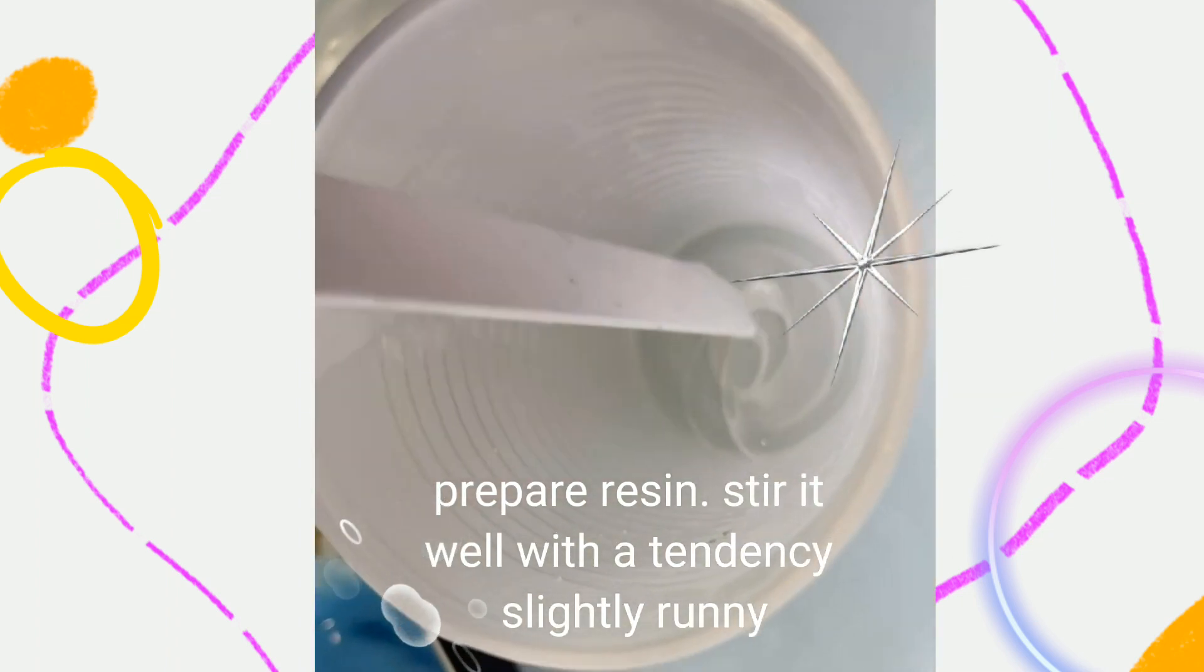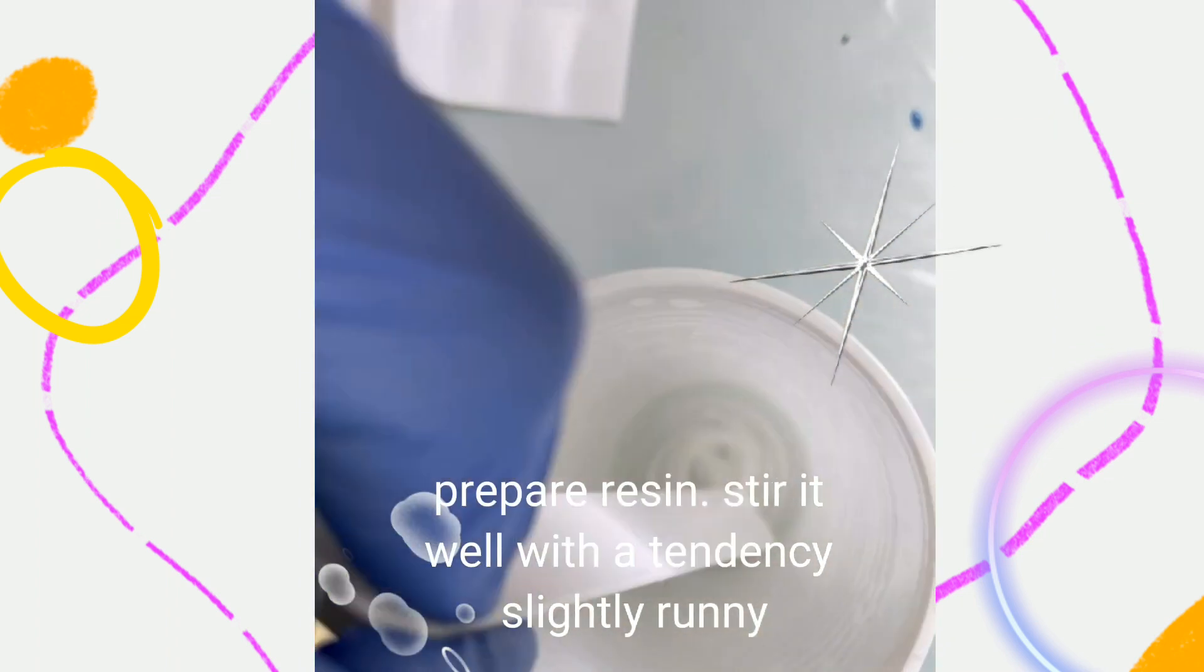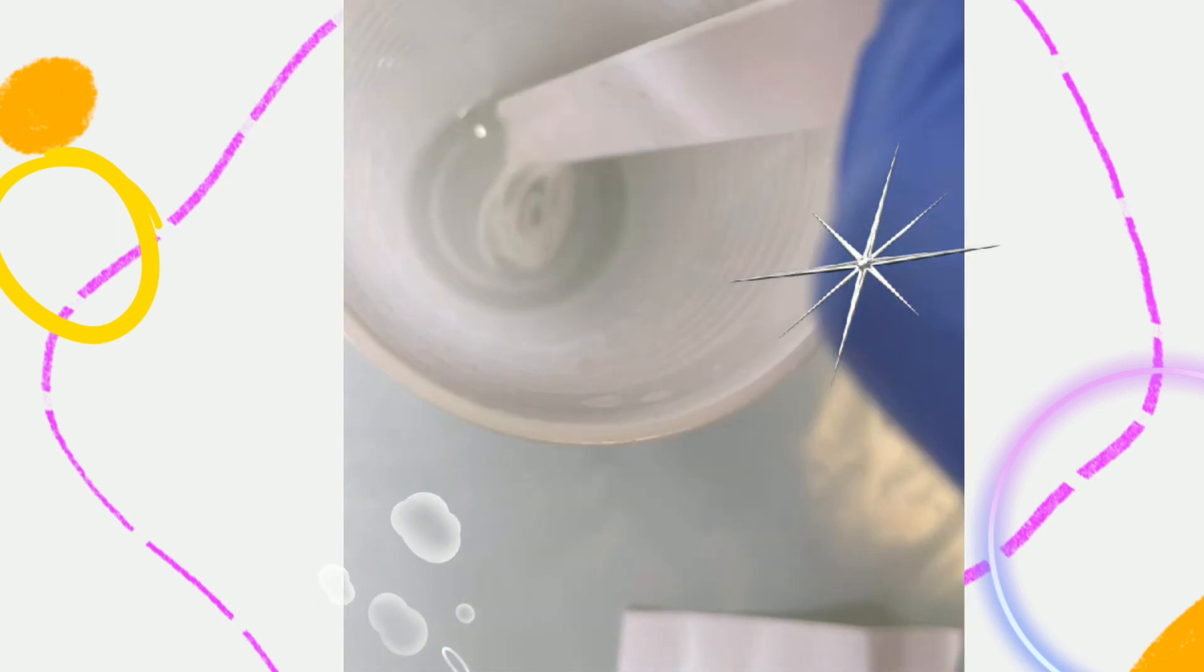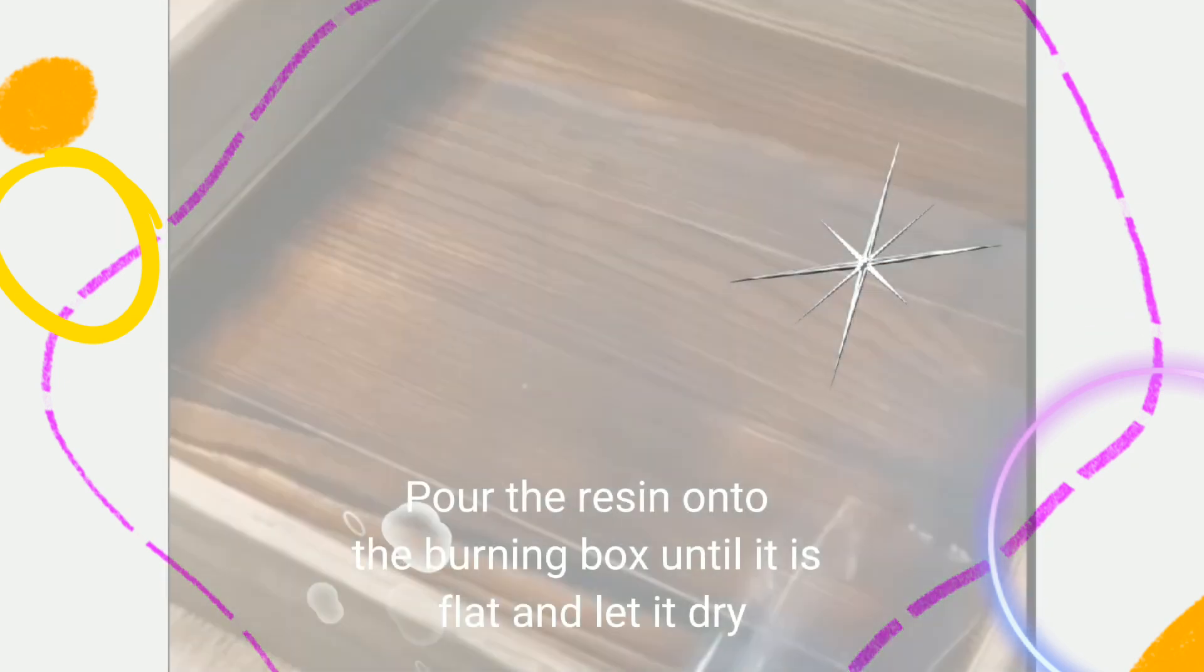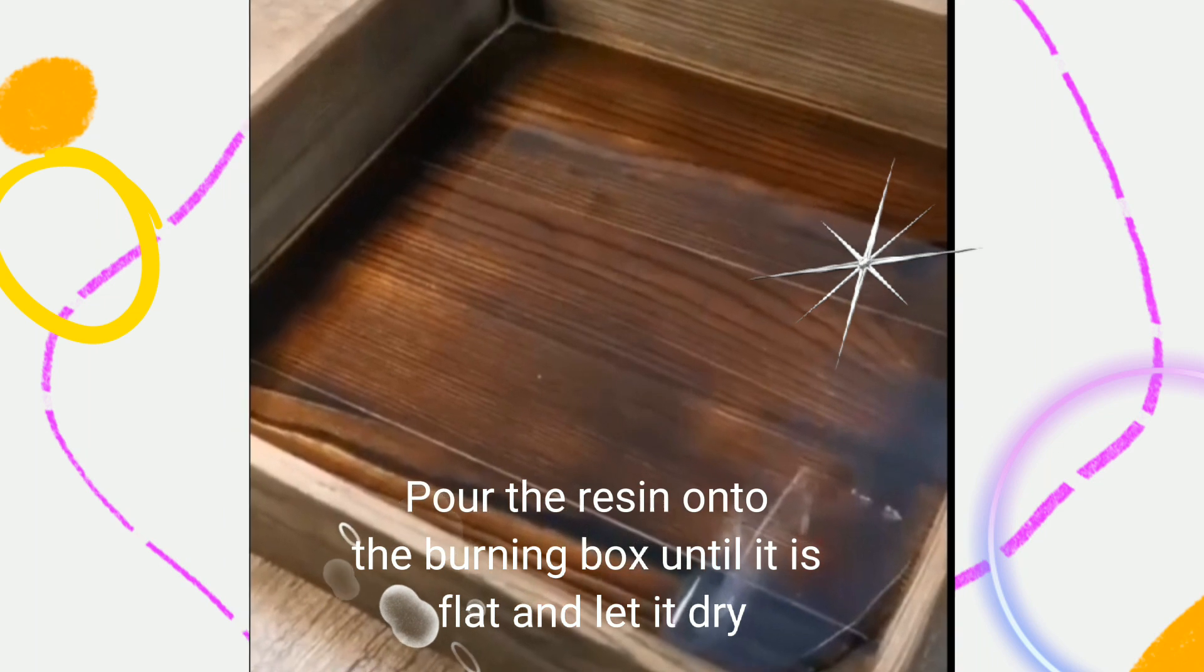Prepare resin. Stir it well with a consistency slightly runny. Pour the resin onto the burning box until it is flat and let it dry.